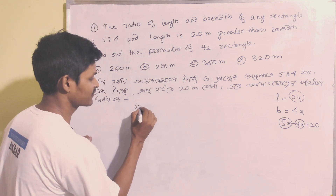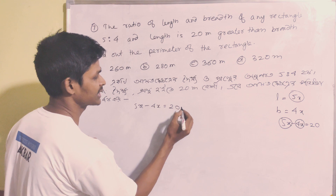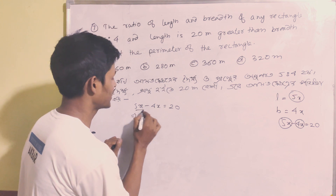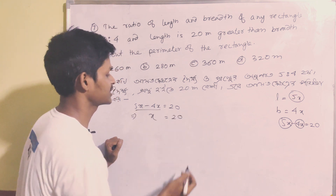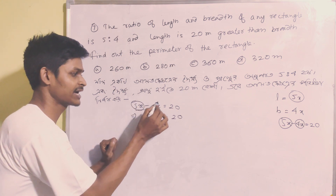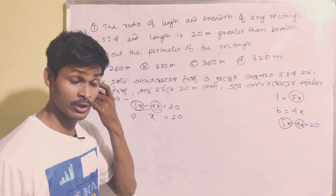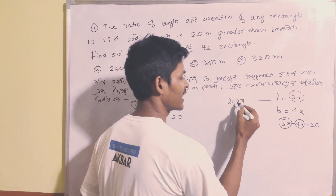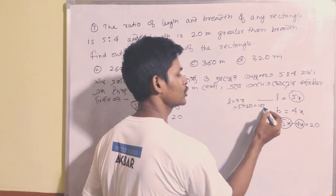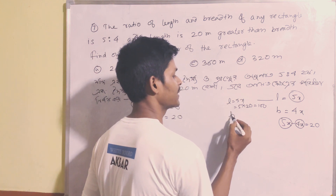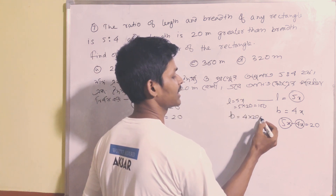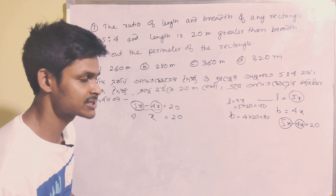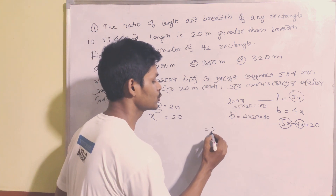Since the length is 20 meters more than the breadth: 5x minus 4x equals 20, so x equals 20. Therefore the length is 5x equals 100 meters and the breadth is 4x equals 80 meters.